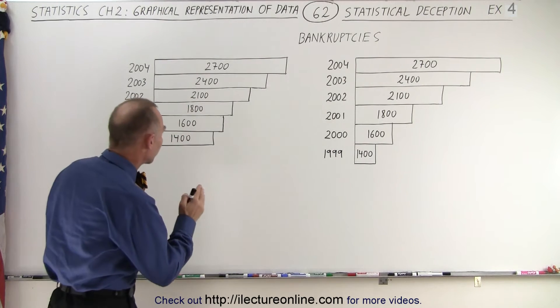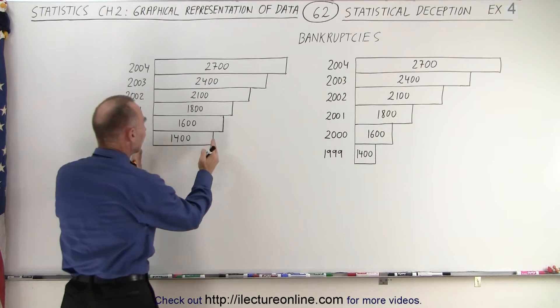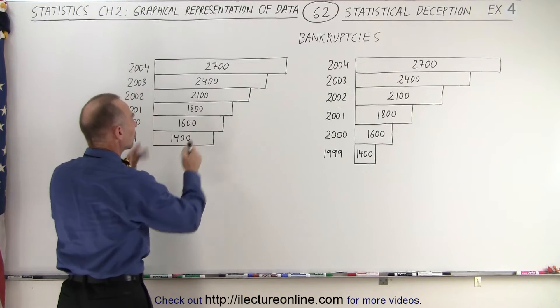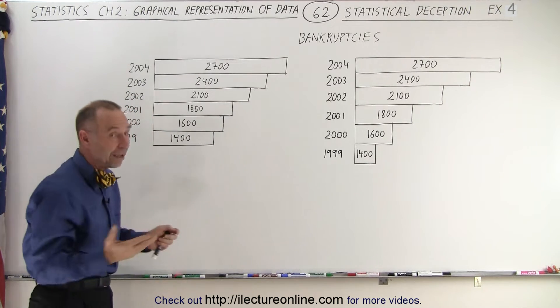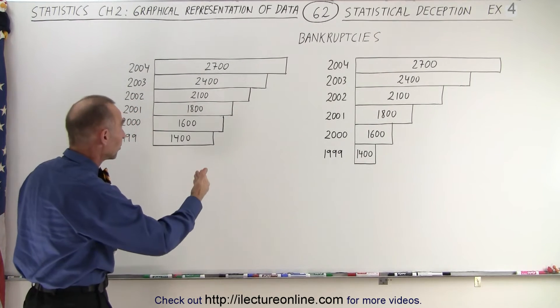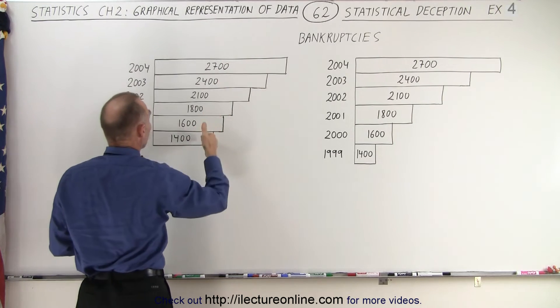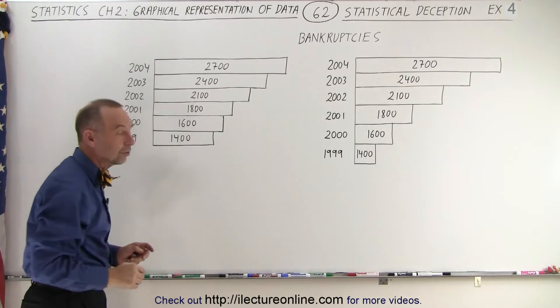But if you truly represent the scale so that the length of each bar represents the total number of bankruptcies, you can see yes it's getting worse. There's more and more bankruptcies and you can see that there's almost a doubling of the bankruptcies in a period of six years.